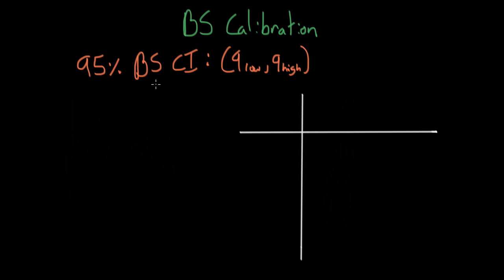Let's assume we have a 95% bootstrap confidence interval generated using one of our favorite techniques, the percentile confidence interval. It gives us a Q-low of something and a Q-high of something, maybe 0.1 and 10.